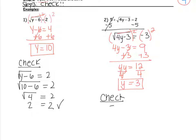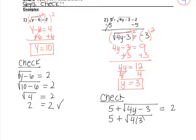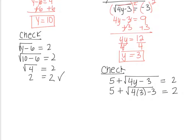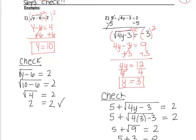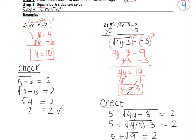So we're going to write the original equation and substitute what we just got — y was equal to 3. Let's start with the inside of the radical: 4 times 3 is 12, 12 minus 3 is 9. So 5 plus the square root of 9 — I want to see if I get 2. So 5 plus 3 — that actually gives me 8, not 2. So this is not a solution. y equals 3 does not work.